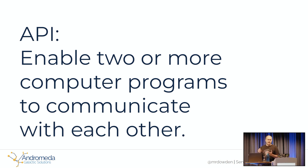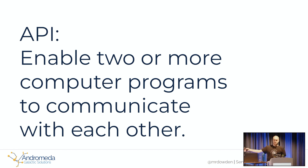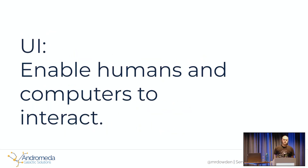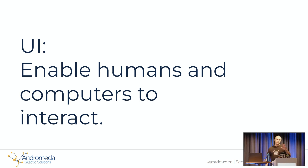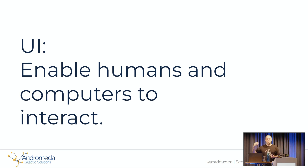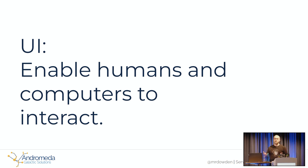We all know what an API is — it's enabling two or more computer programs to communicate with each other. I know at an API conference I don't need to put this up here, but I do it to illustrate a specific contrast, which is UI — the other type of interface that every single one of our applications has, which enables humans and computers to interact. In many cases, our goal when building APIs is not actually to connect different parts of our application, but rather to get information in front of the user or get information from the user.